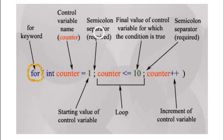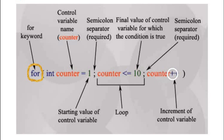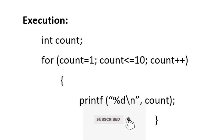A semicolon is a separator at the end of part one. Then comes the second part, which is the condition. Based on this condition, the body of the for loop is executed — if the condition is true the body executes, if false the loop terminates. The condition is evaluated before entering the body. The second part is also terminated with a semicolon. Then comes the third part, where the control variable is incremented or decremented.